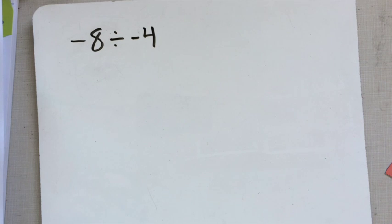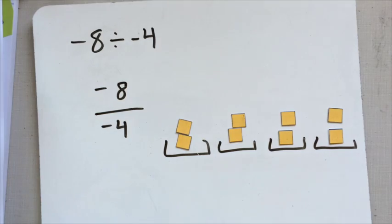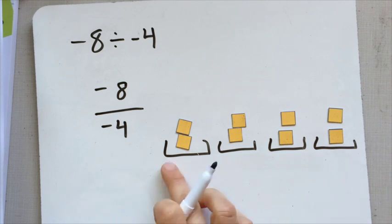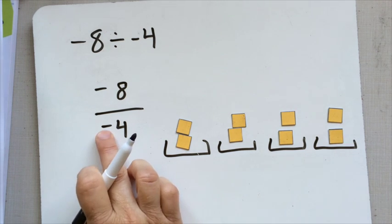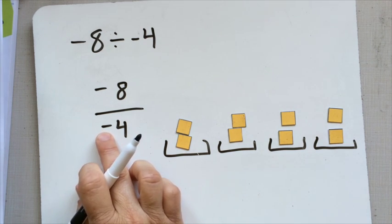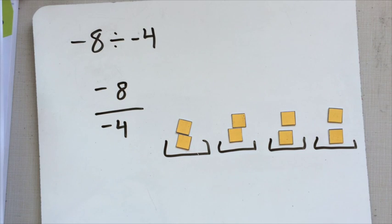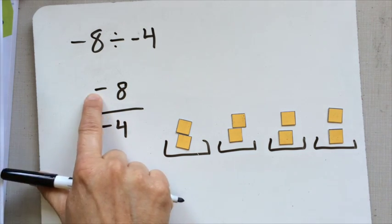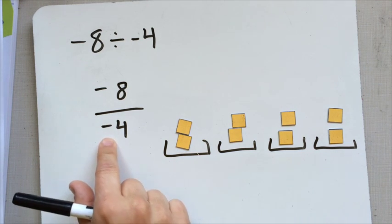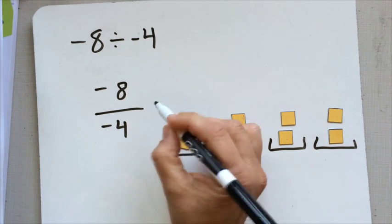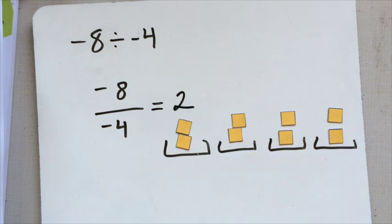To try on your own: negative 8 divided by negative 4. Pause the video, give it a try. I started with 8 negative ones, the red side. I divided them into 4 groups. So 2 in each group. And then because of this negative in the denominator, I flipped all my tiles over. So I've got a negative number of tiles that I'm dividing, but I've got a negative on the number of groups I'm dividing them into. So my answer is going to be positive.